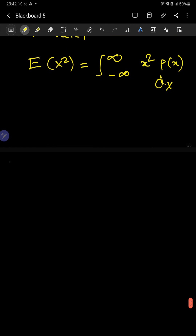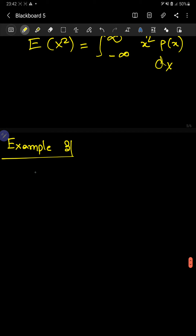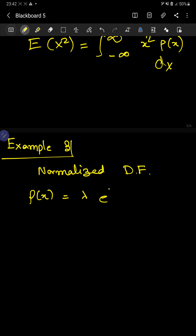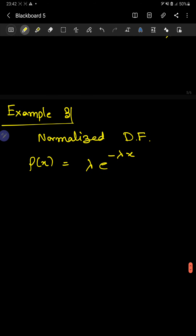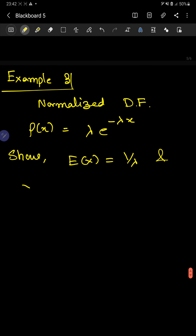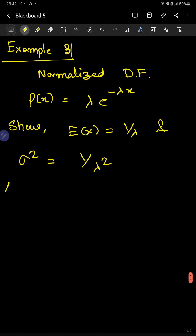Now let's see an example and things will become much clearer. We have a normalized density function: ρ(x) = λ × e^(−λx), which is the exponential distribution. The problem asks us to show that the mean is 1/λ and the variance is 1/λ².